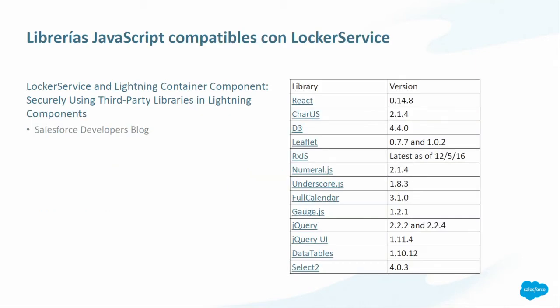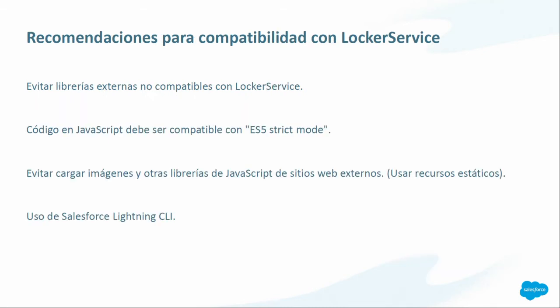Si ustedes van a empezar a hacer sus componentes Lightning, sería bueno que revisaran las librerías de JavaScript que son compatibles. Aquí tenemos una lista no exhaustiva de las librerías compatibles. Quiero enfatizar que jQuery 2.2.2 está permitido y es lo que vamos a utilizar en nuestro ejemplo. Algunas recomendaciones para construir componentes que soporten Locker Service: primero, no utilice librerías externas que no sean compatibles. Su código de JavaScript debe ser compatible con el modo estricto. No carguen imágenes u otras librerías de sitios externos que no sean Salesforce. Para esto, Salesforce nos da los recursos estáticos. Utilicen Salesforce Lightning CLI, que hace un análisis de todo su código y da recomendaciones o warnings de qué puede ser un problema de seguridad.